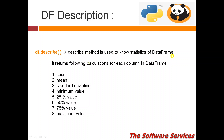The describe method is used to know the statistics of the data frame. It returns the following calculations for each column in the data frame: count (number of rows available), mean (average of the column), standard deviation, minimum value, maximum value, 25th quartile, 50th quartile, and 75th quartile.